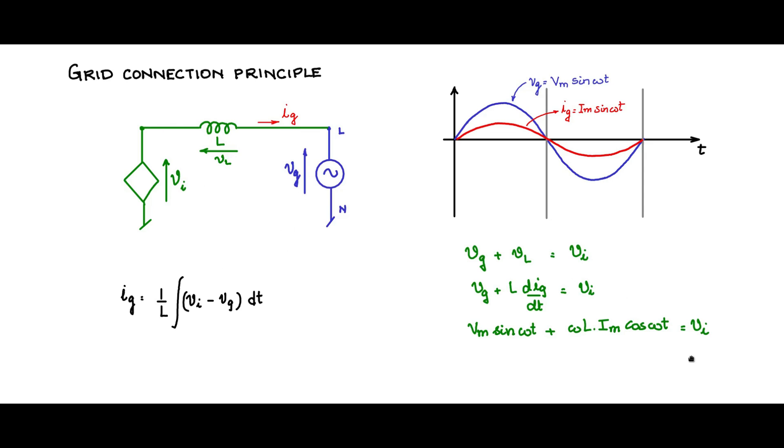Now if I set VI equal to Vm sin omega t plus omega L IM cos omega t minus VG, which is Vm sin omega t, the Vm sin omega t will get cancelled and what appears across the inductor will be omega L IM cos omega t. That is a cosine wave. On integrating, IG will be a sinusoidal wave, which is what we need, so that it is in phase with the voltage.